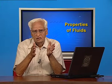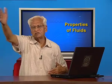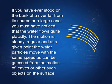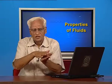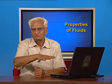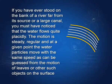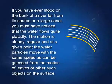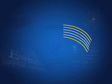If you have ever stood on the bank of a large river, say like Ganga or Yamuna in plain areas, you will see the water flows very slowly, very placidly, very orderly. It is a very orderly flow of water. If you choose a point, at that point the velocity of flow is constant. Such flow is called streamline flow.